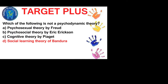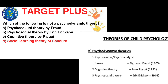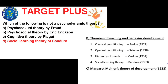Which of the following is not a psychodynamic theory? The psychodynamic theories are psychosexual or psychoanalytical theory by Sigmund Freud, cognitive theory by Jean Piaget, and psychosocial theory by Eric Erikson. So the answer will be social learning theory by Bandura, which is a theory of learning and behavior development. Classical conditioning is by Pavlov, operant conditioning by Skinner, hierarchy of needs by Maslow, and social learning theory by Bandura.